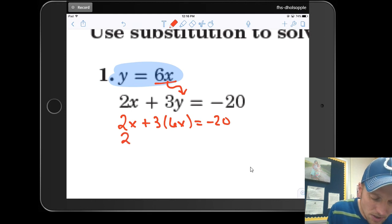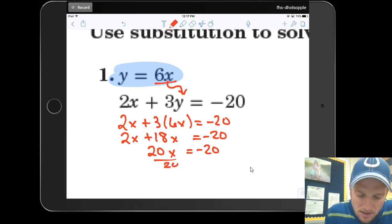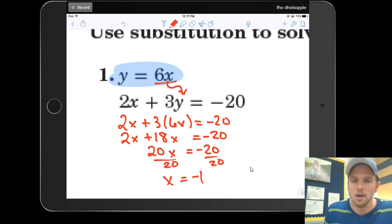So I've got 2x plus 3 times 6x is equal to negative 20. So this is going to be 2x plus 18x equals negative 20. Well, this is not too bad, 20x is equal to negative 20, divide by 20, and I get x equals negative 1.